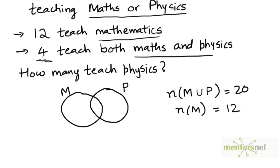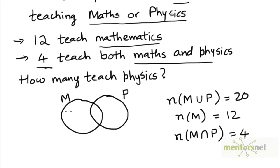And the number of teachers teaching both the subjects is 4. So n(M intersection P), so these are the teachers that teach both the subjects, is 4. And we are asked how many of them teach physics? In other words, what's the value of n(P)?